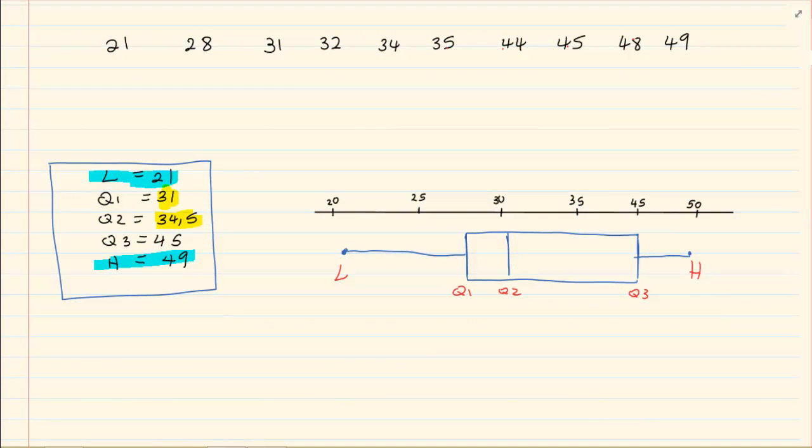When you are given data, we had to put it in order and then we had got the lowest, the Q1, Q2, Q3 and we had plotted on a box and whiskers. When we do this, they would ask questions like, discuss how the graph is skewed.